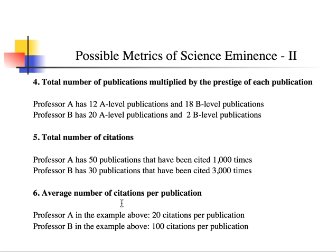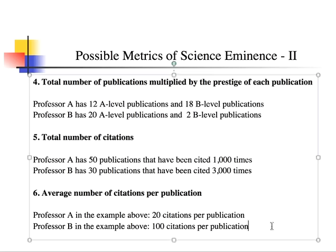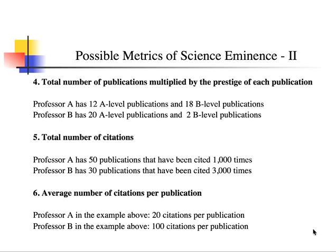One can then calculate the average number of citations per publication. Professor A has 20 citations per publication (1,000 divided by 50), whereas Professor B has 3,000 divided by 30 — so the average number of citations is higher for Professor B. Even though that professor has published fewer works, his work has been more influential.